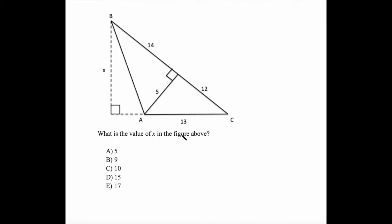What is the value of x in the figure above? We have this triangle ABC here, and this triangle is further broken into two smaller triangles. We have these dotted lines going on here. This problem is asking about area — only the area formula, which is area equals one-half base times height.